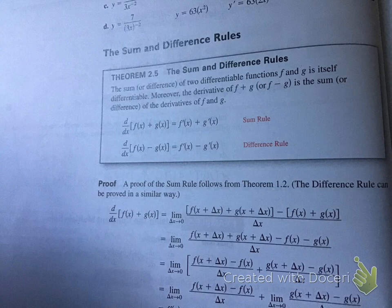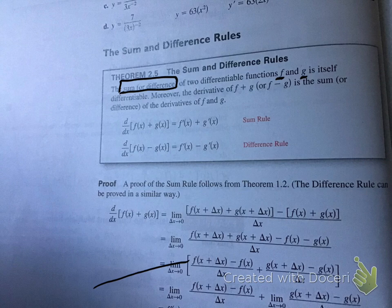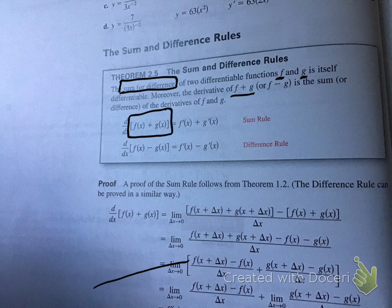I also need to cover Theorem 2-5, the sum and difference rules — which Harrison asked about in class Friday. If f and g are both differentiable functions, then their sum or difference is also differentiable. Moreover, the derivative of f plus g or f minus g is simply the sum or difference of the individual derivatives of f and g. So if we have two separate functions added or subtracted, we can just take the derivative of each one individually.